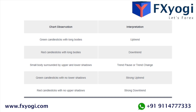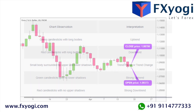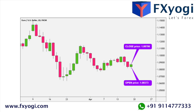Looking at the advantages of Heiken Ashi compared to the traditional Japanese candlestick chart: Heiken Ashi slows down the speed of the market, eliminating unnecessary false signals. Retracements are minimized, giving you greater confidence in your price action analysis.